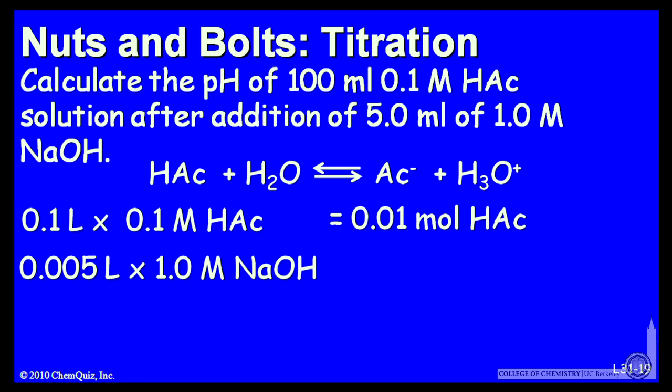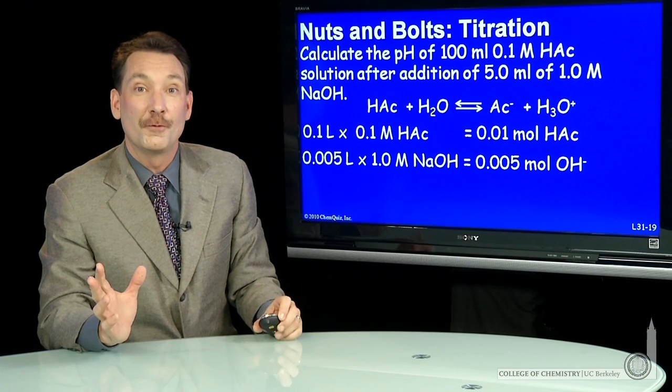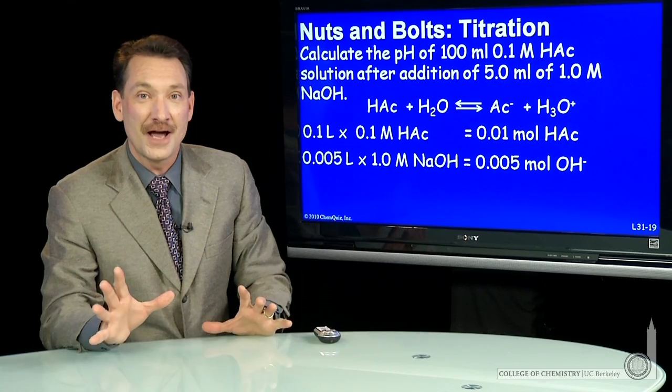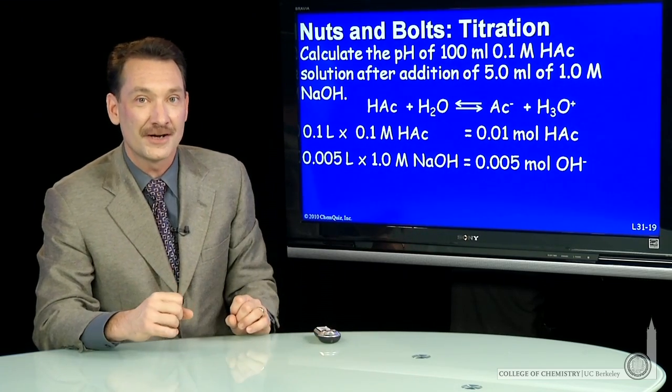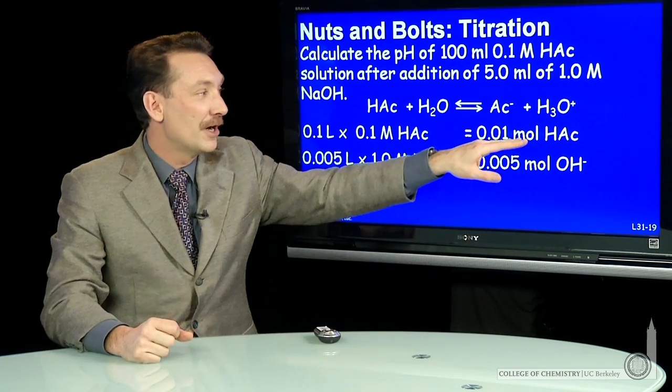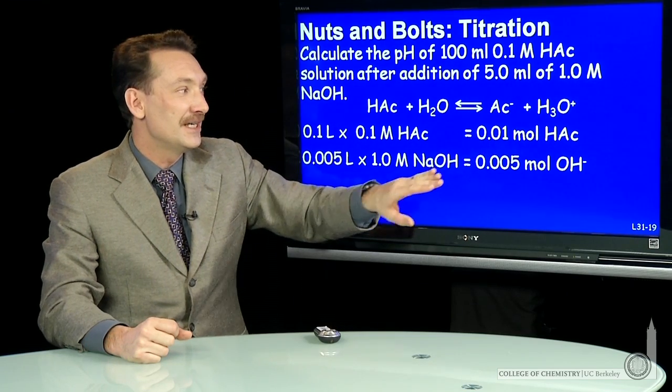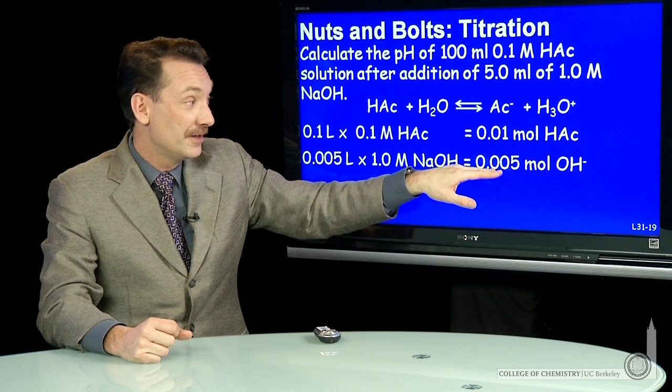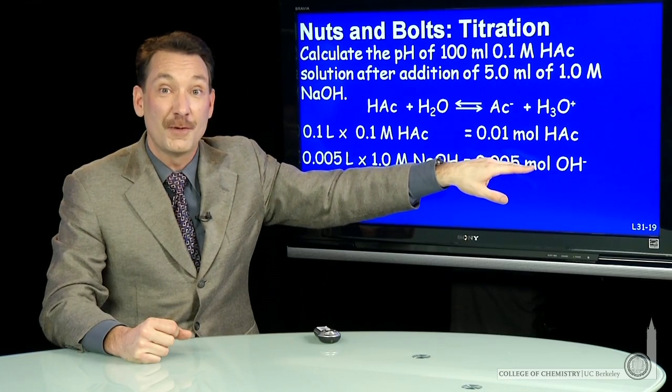So I'm also going to say, how much base do I add? I'm going to add these 5 milliliters of sodium hydroxide. How many moles of base is that? Well, it's 0.05 liters, 5 milliliters, times the molarity, 1.0, is 0.005 moles of OH minus. So I can say, why don't I start my equilibrium calculations, my titration calculations, at the point where 0.01 moles of HAc have just reacted with these 0.005 moles of OH minus.